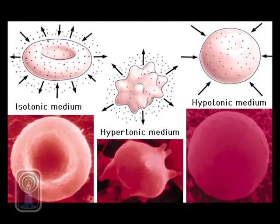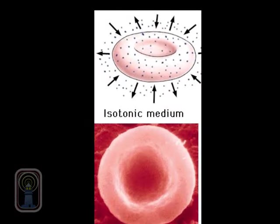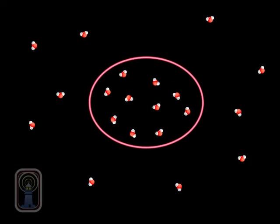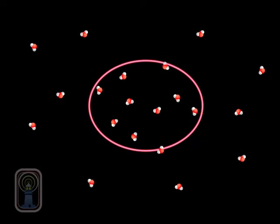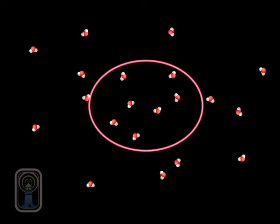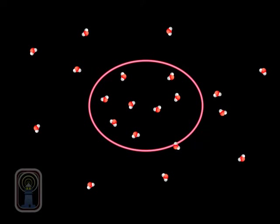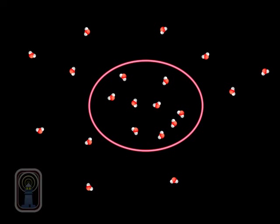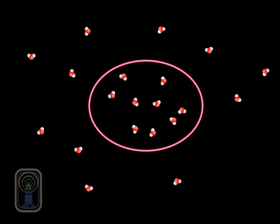If a solution is isotonic, there is an equal concentration of solute both inside and outside of the cell. Although water molecules continuously move into the cell and out of the cell, the concentration on both sides of the semipermeable membrane remains the same.